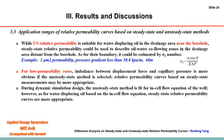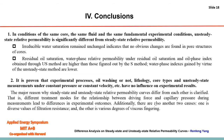Secondly, it is proven that experimental processes — whether oil washing is performed or not — lithology, core types, and whether unsteady-state measurements use constant pressure or constant velocity have no influence on the experimental results. The main reason leading to the difference between steady-state and unsteady-state relative permeability curves is the displacement force and capillary pressure during measurement. Additionally, there are two other contributing factors: the diverse values of filtration resistance and the various degrees of viscous fingering.